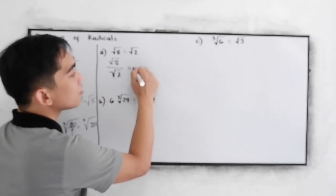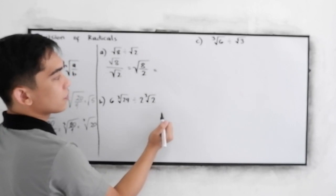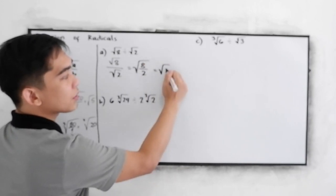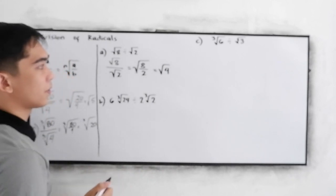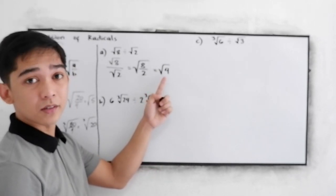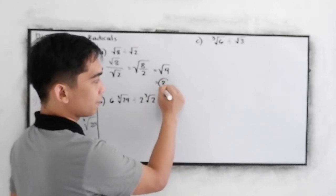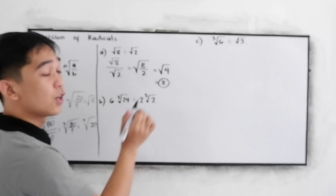We have square root of 8 over 2. 8 divided by 2, that is square root of 4. 4 is a perfect square number, so we can still simplify. That is equal to 2. Our final answer is 2.